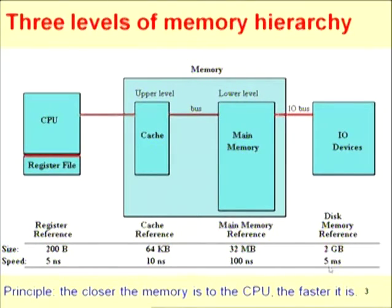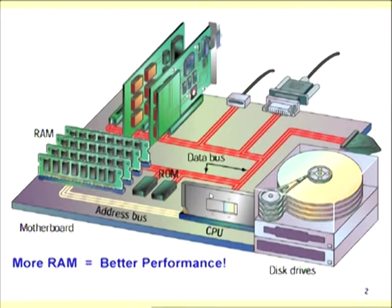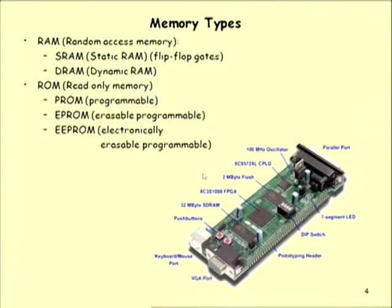I/O devices have an access time of 5 milliseconds. On the motherboard, ROMs would be placed nearer to the CPU. Now let us broadly classify these memory types.